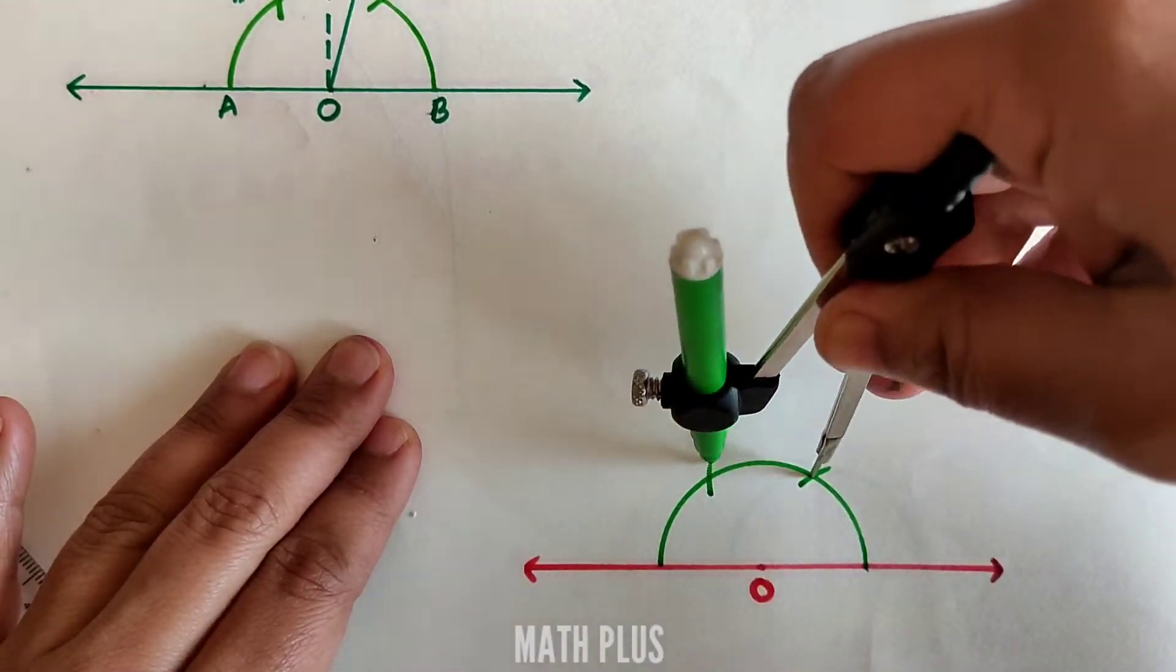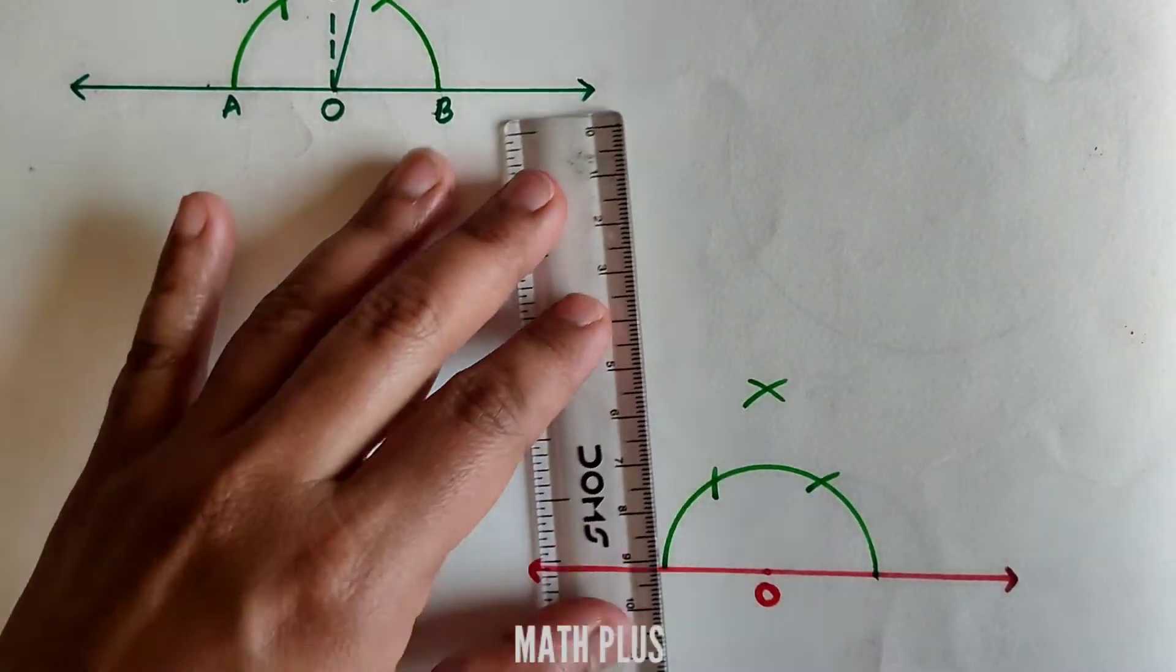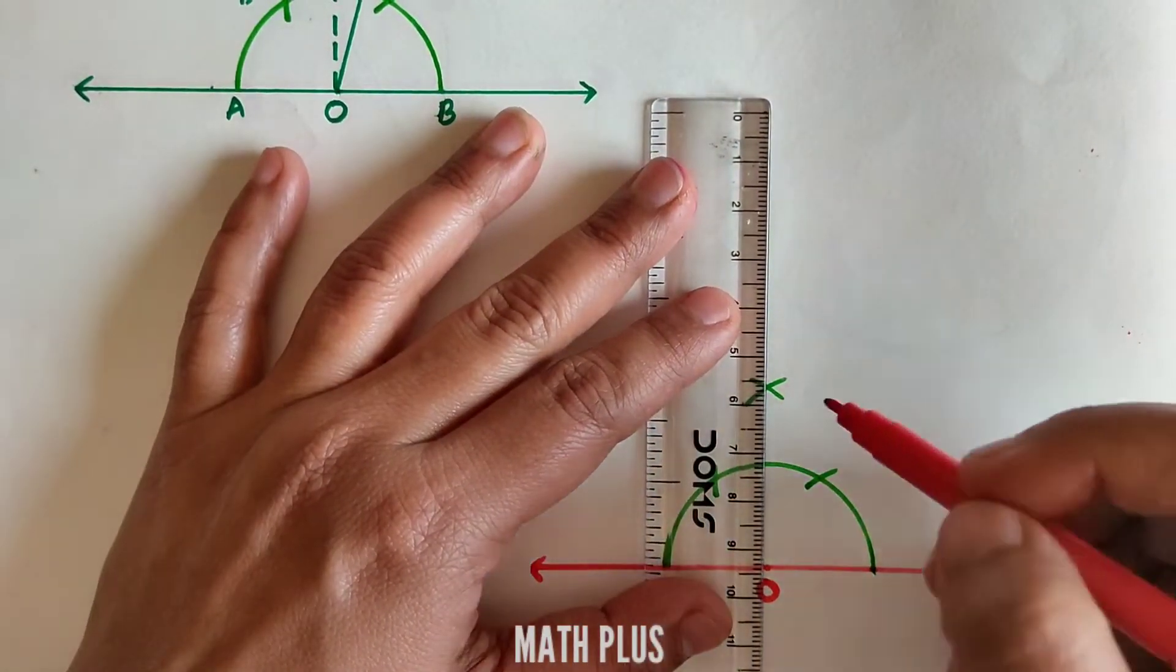At the point of intersection of the semicircle and the line, mark an arc. From the arc, draw another arc. Then construct a 90 degree angle again with a dotted line.